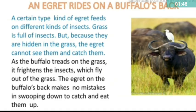An egret rides on a buffalo's back. A certain kind of egret feeds on different kinds of insects. Grass is full of insects, but because they are hidden in the grass, the egret cannot see them and catch them. As the buffalo treads on the grass, it frightens the insects, which fly out of the grass. The egret on the buffalo's back makes no mistake in sweeping down to catch and eat them up.